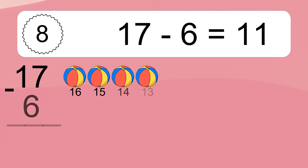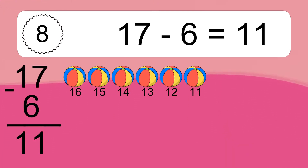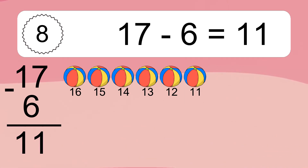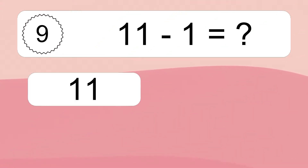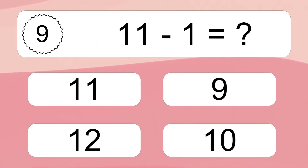17 minus 6 equals what? 17 minus 6 equals 11. Let's count it: 16, 15, 14, 13, 12, 11.